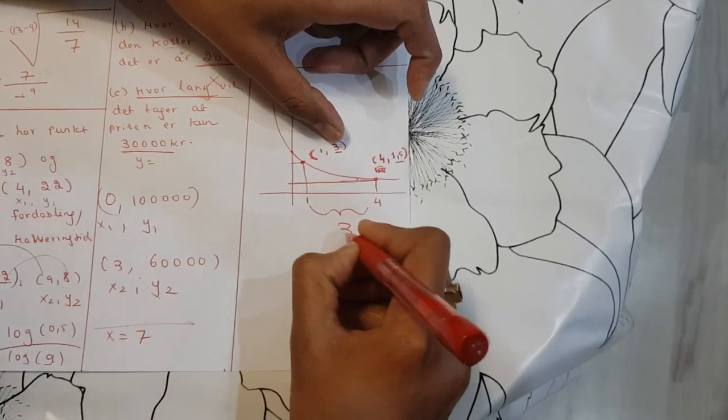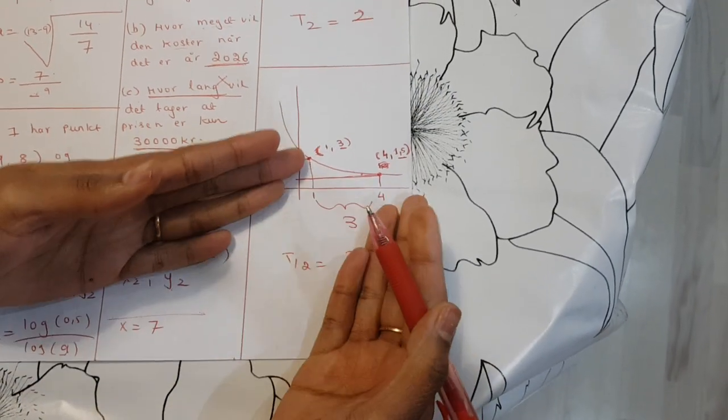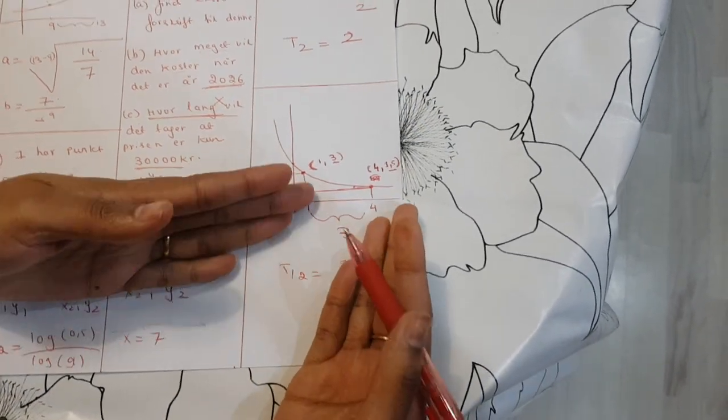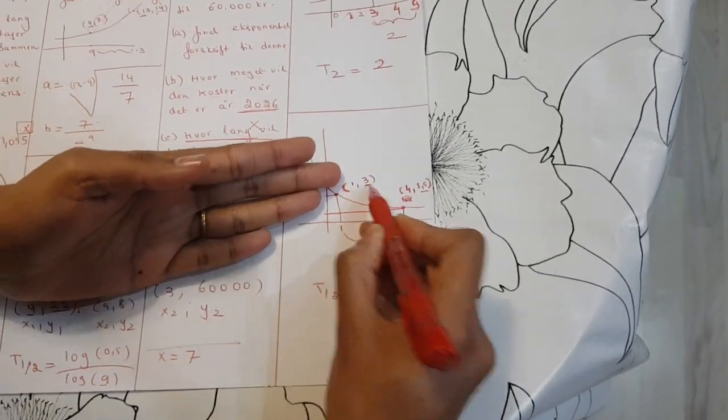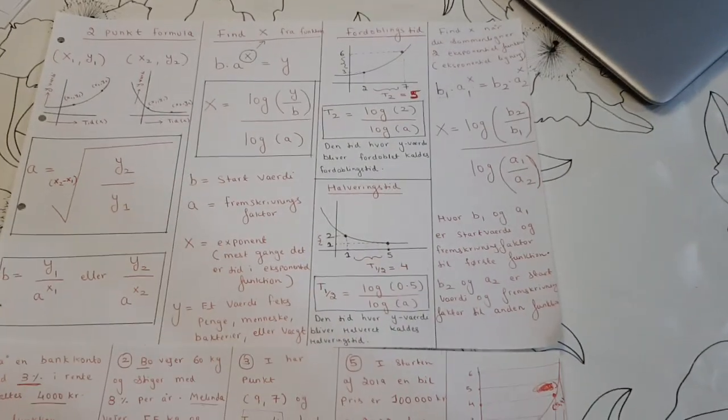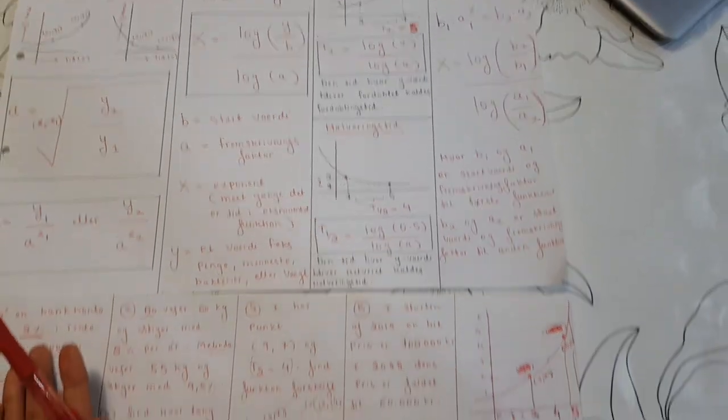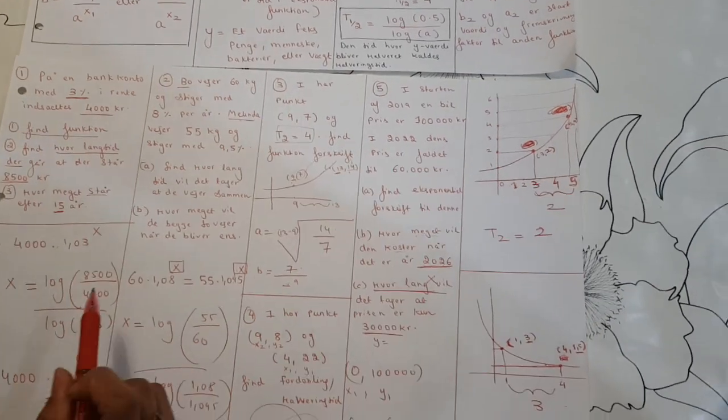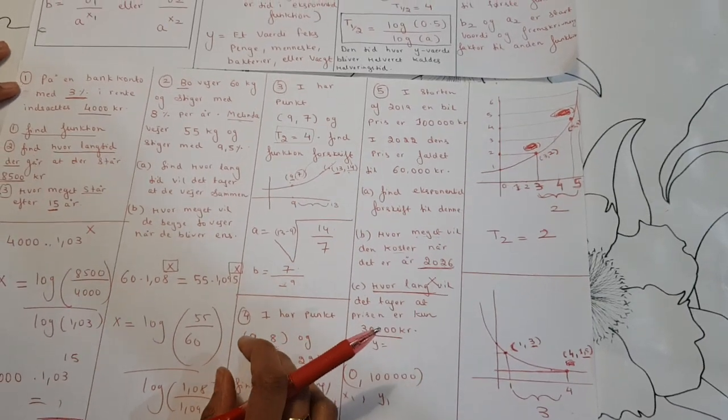So that was all our formula collection. I hope when you get problems, you should choose yourself which problem, which information you should use. But be careful, as soon as you look at it, it's not a two-point formula, because you're looking at that, it's not the two-point formula, because you have start value, so not this two-point formula here. So yes, I hope you have understood everything.